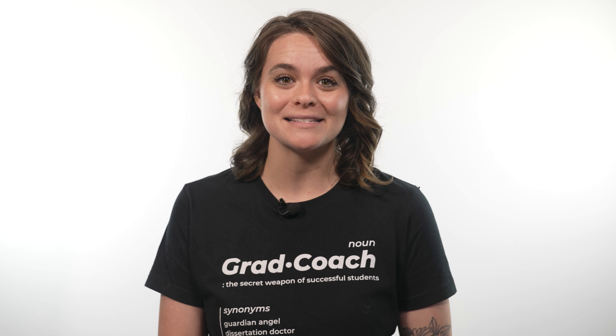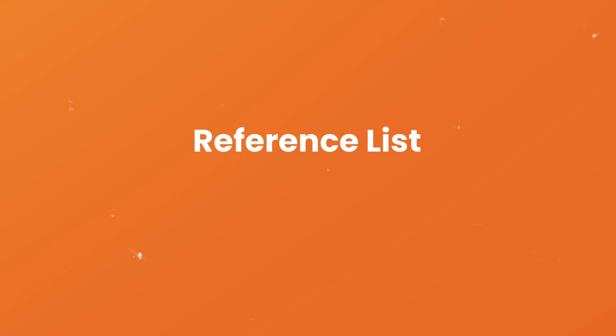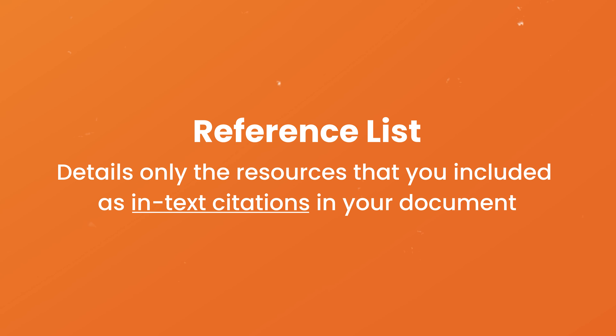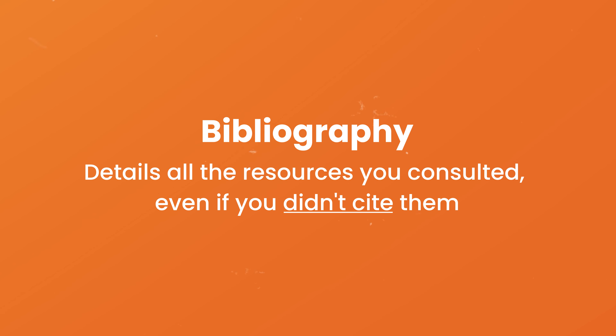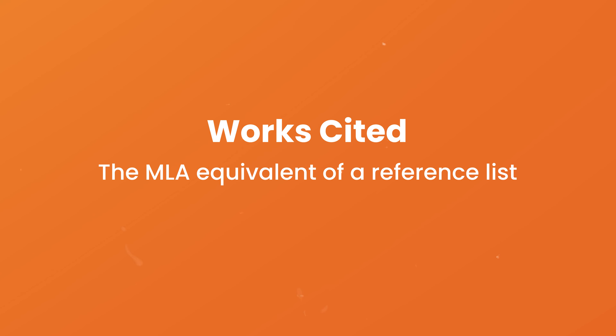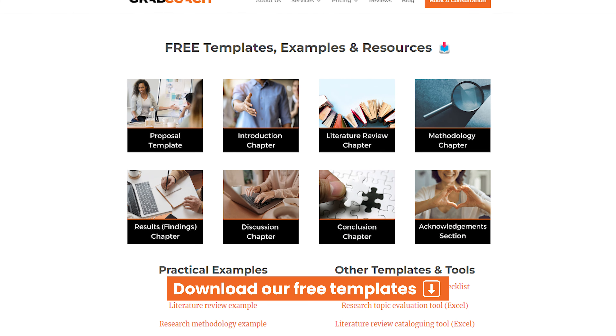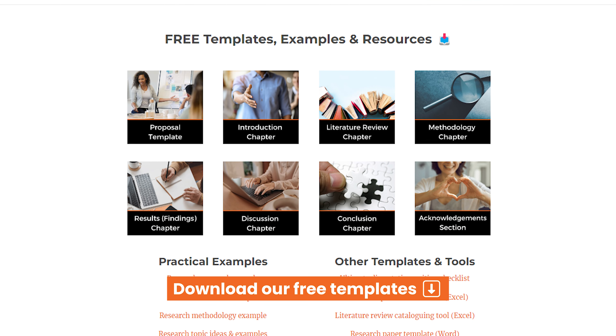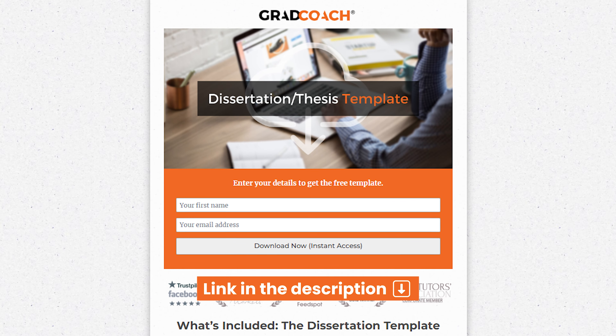Let's quickly recap the key points. A reference list details the resources that you included as in-text citations in your document. A bibliography details all the resources that you consulted while developing your work. And a list of works cited is simply the MLA equivalent of a reference list. If you're currently working on a dissertation or thesis, be sure to check out our collection of free chapter templates — the easiest way to fast-track your writing and lay a solid foundation for your project.